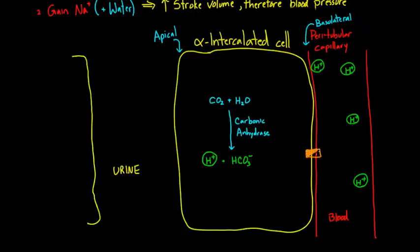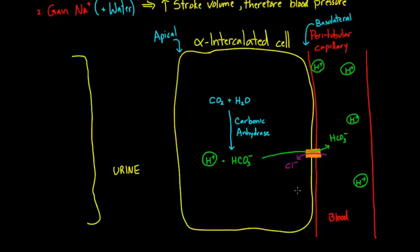If we could somehow get that bicarb over to the blood, we could neutralize one of those protons. There's a transporter in the basolateral surface that sends the bicarb across to the blood side. In exchange, it takes on a chloride, which is now sitting on the inside of the cell. That bicarbonate binds to the proton in the blood, and they do the reverse reaction — going back to water and carbon dioxide.